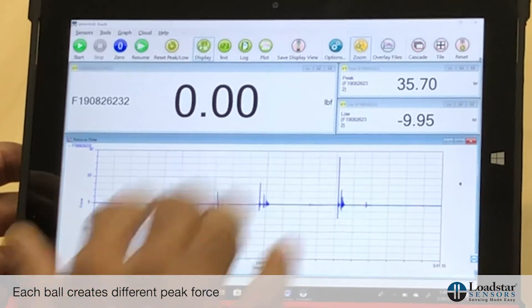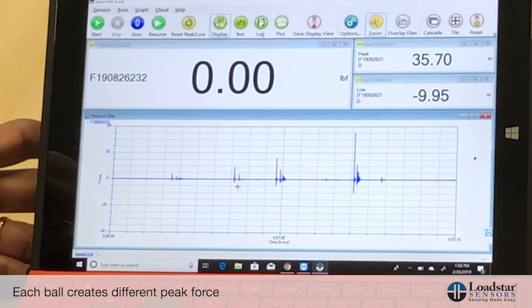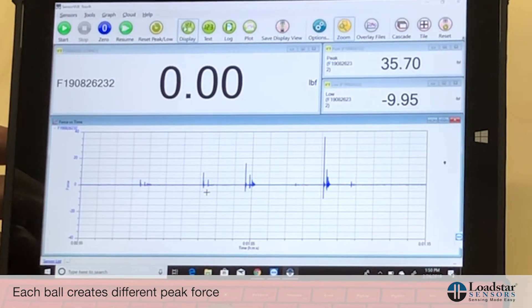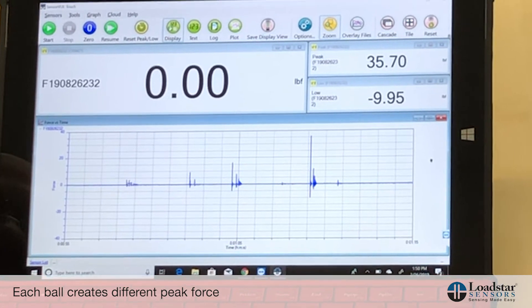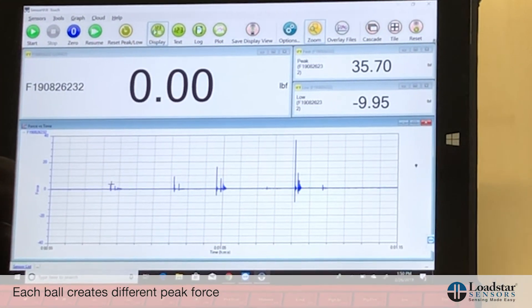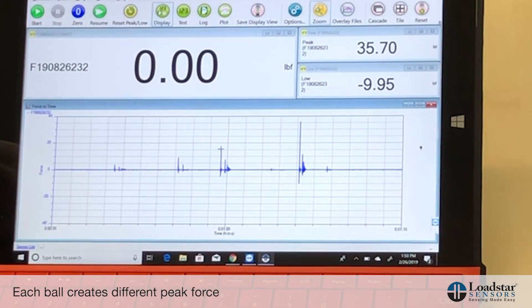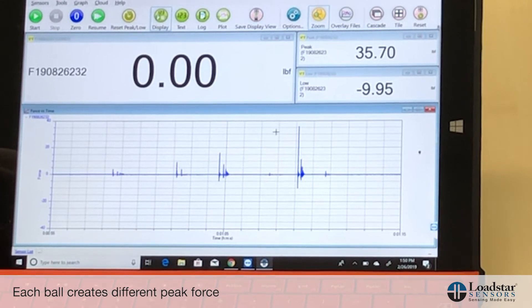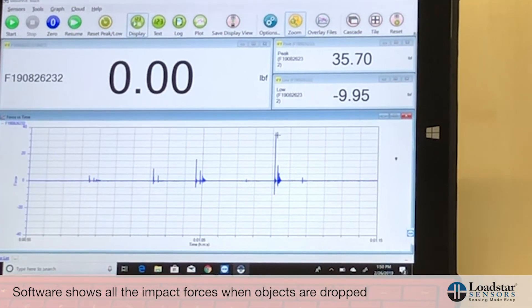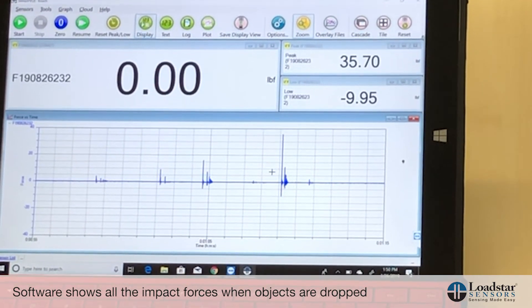You can see that the smallest ball was less than 5 pounds of peak force. This is almost 10 pounds of peak force, this is about 15 pounds of peak force, and here is about 36 pounds of peak force. The software shows you all the forces that it feels upon the drop, and that's why you can see the dynamic nature of the force versus time curve.